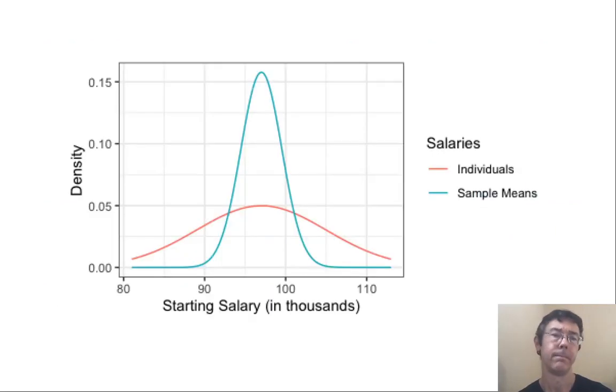Let's have a picture. Here, I have drawn two bell curves. The first, for individuals in this population, that's in red. It's got a fair amount of spread. It's a pretty wide bell curve.